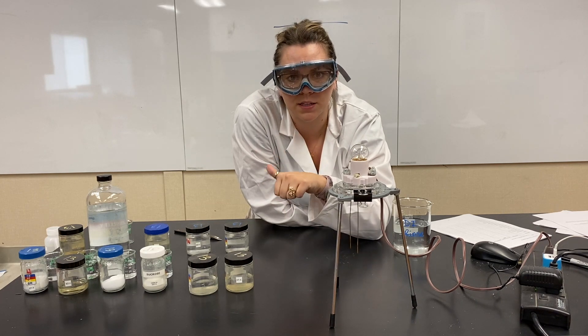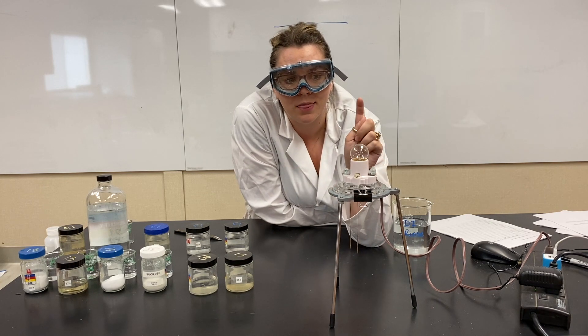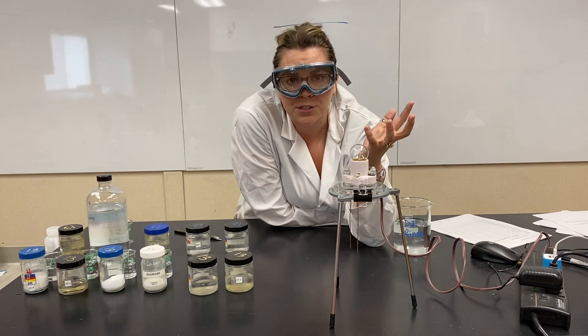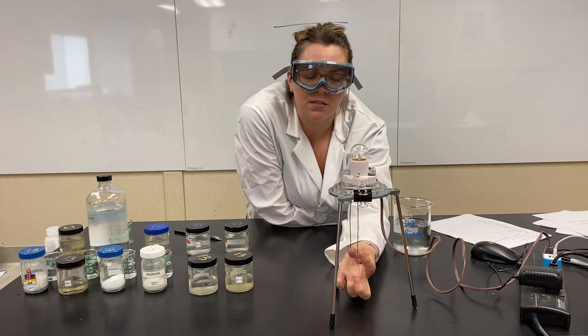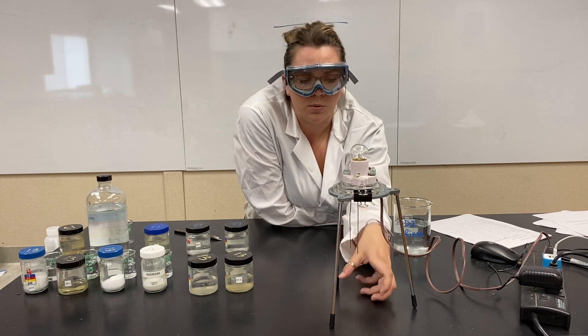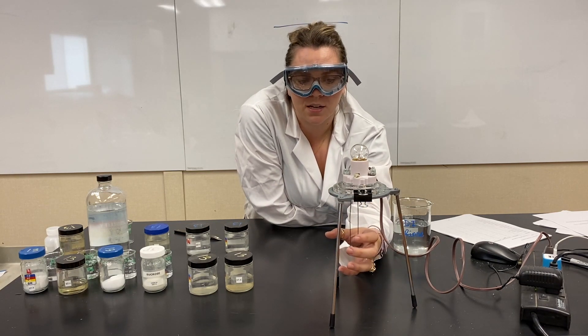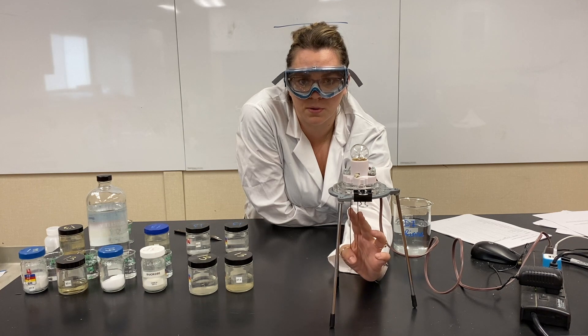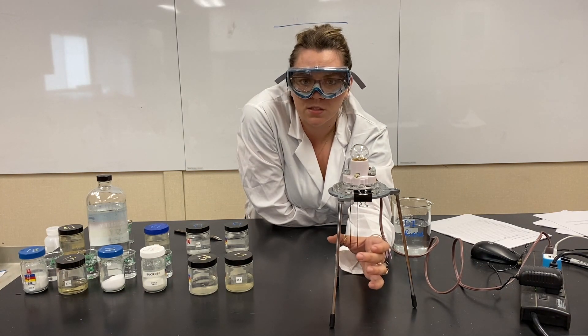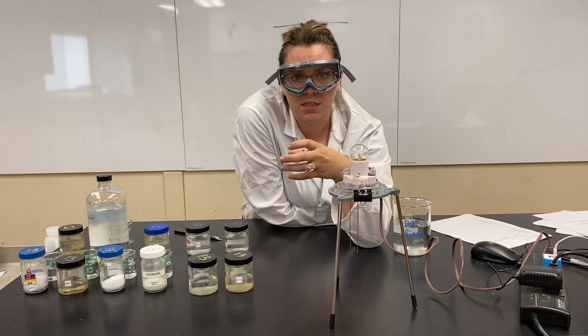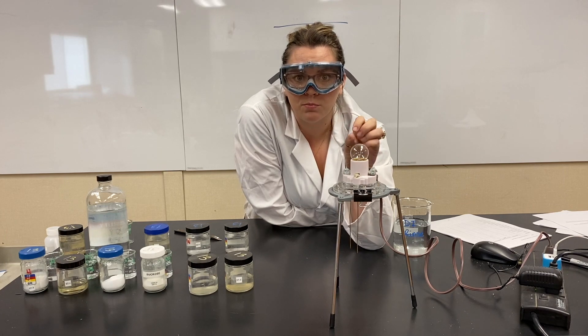And the stronger the electrolyte, the more electricity that will be conducted through the solution. So that means the brighter the light bulb. The way we actually get to test this is this is a light bulb that has the circuit disconnected. The circuit is open and we're going to close the circuit by putting these different solutions underneath the two parts of the circuit that are open and we're going to connect them with the solution. If the solution is a good electrolyte, is a strong electrolyte, that light is going to light up really bright.